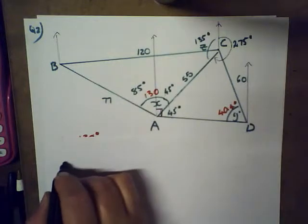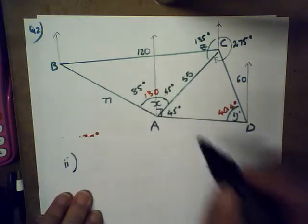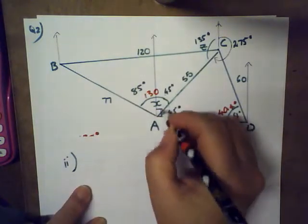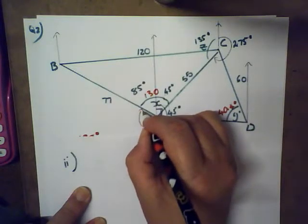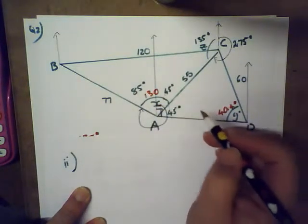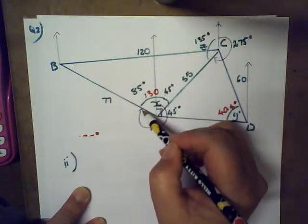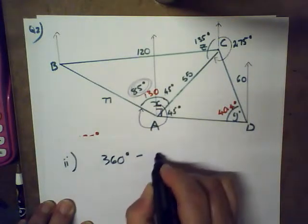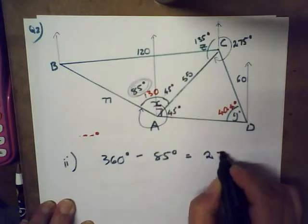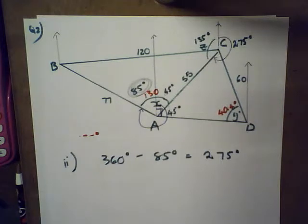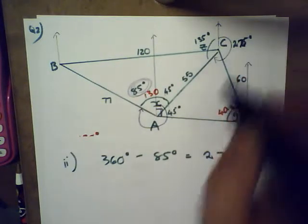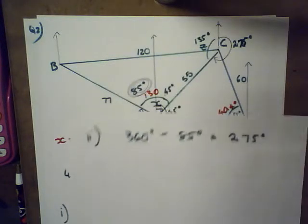For part D, the bearing of B from A: I want this bearing over here. It's 360 degrees minus 85 degrees, which gives 275 degrees. I initially said 275 for the previous part — that was an error; the bearing of A from C is 225 degrees, and the bearing of B from A is 275 degrees.